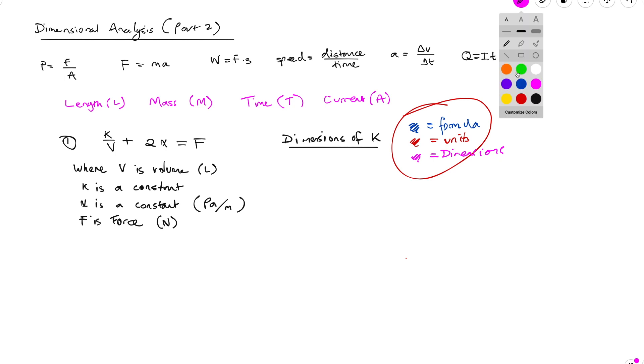All right, so if we start with the formula, let's start in blue then. When we're adding two terms like k over v and 2α, and we can see all of the units are given here as to what they represent, although k is missing and our job is to work out the dimensions of that.